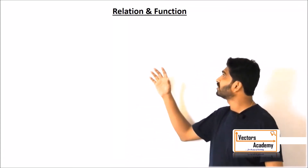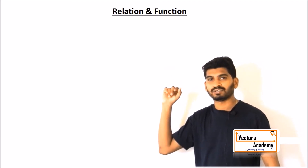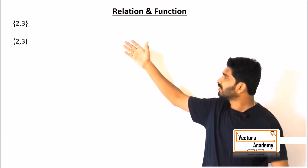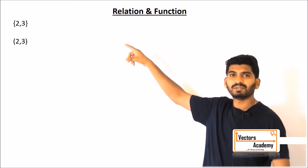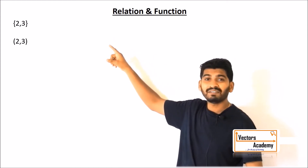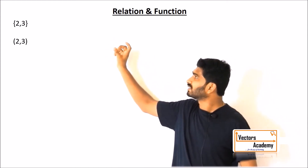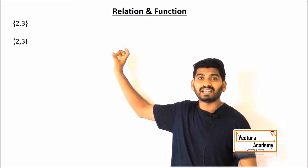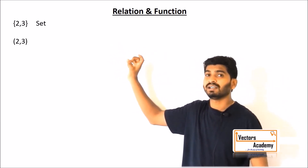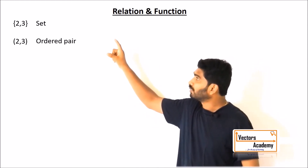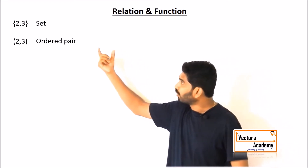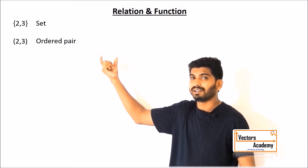Let's start with the first chapter: Sets, Relations and Functions. Consider these two notations — both contain the elements 2 and 3. The first is in curly brackets and the second is in round brackets. The curly brackets indicate that it is a set, whereas the round brackets indicate it is an ordered pair. The set contains two elements, 2 and 3, whereas the ordered pair itself is a single element.